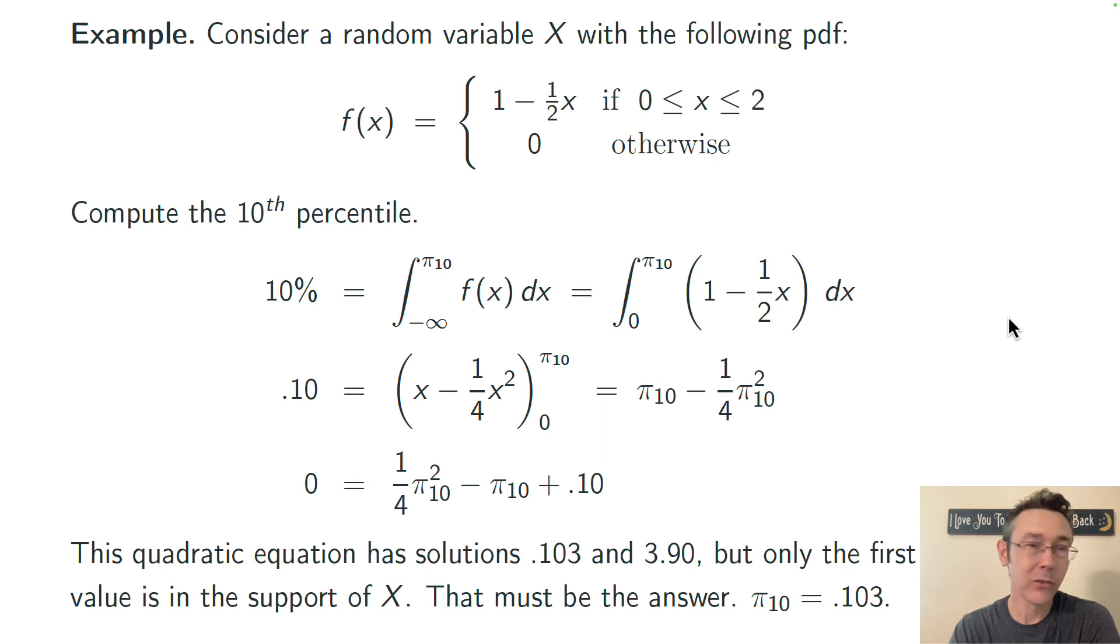In this case, the quadratic has two solutions, as is the usual. You have 0.103 and 3.90. But of course, 3.90 isn't in the support of this random variable. So that can't be the one we're looking for. It's a spurious solution to this equation. So the 10th percentile for this random variable is 0.103.